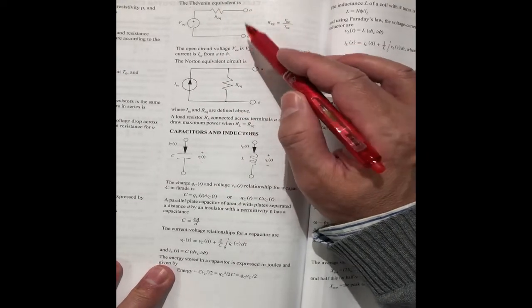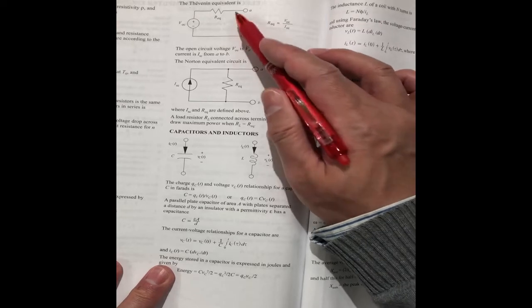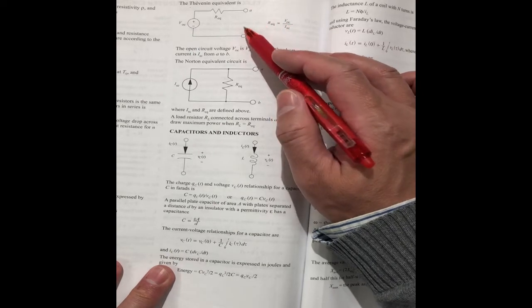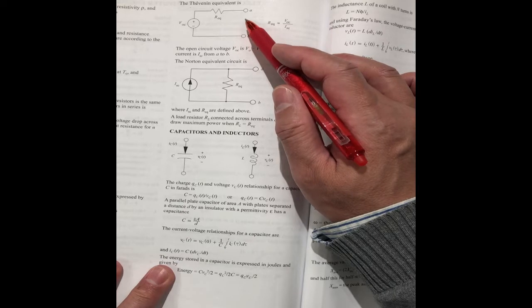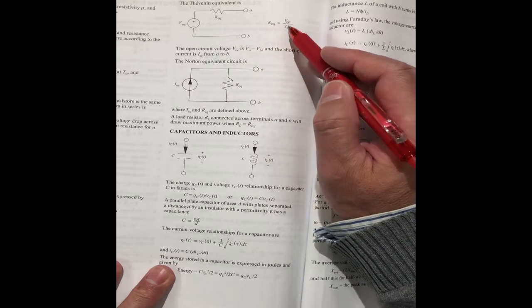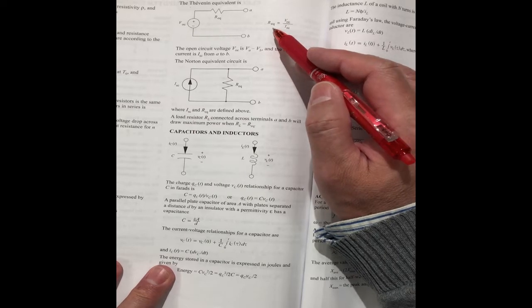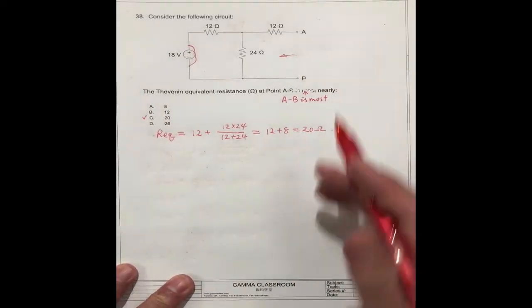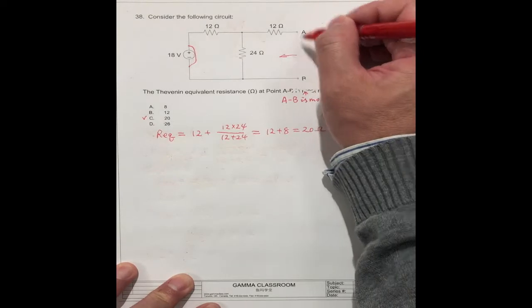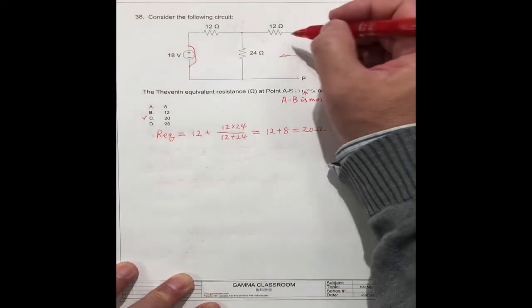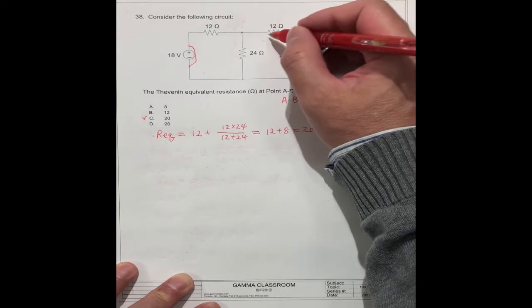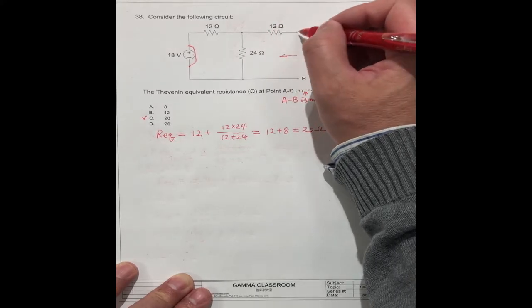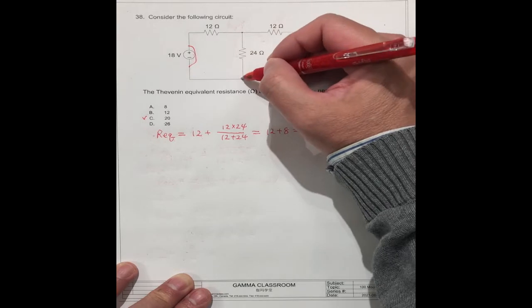Open circuit means when A, B open, we can find the voltage between the two points. When we open these two circuits, they have no current flowing through this resistor. They have no voltage drop between the resistors. This point is equal to this point, the voltage.